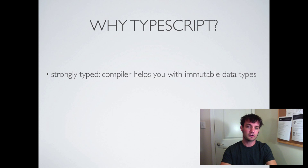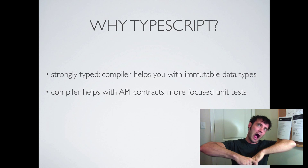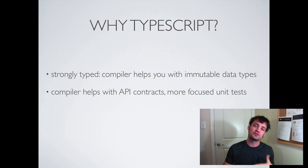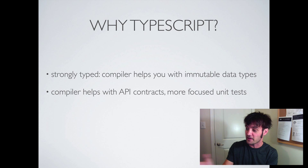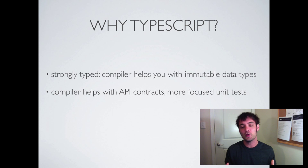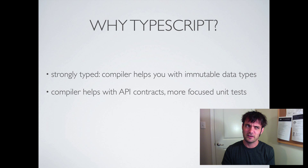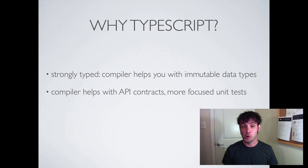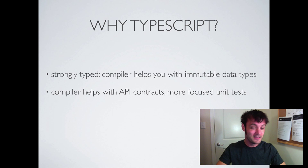Number two: the compiler helps with everything — it allows more focused unit tests. From the ivory tower perspective, of course you should write unit tests. But most people don't write unit tests — it's very difficult to sell to a client. The point is, if you're going to write unit tests you can write more focused ones; if you're not, the compiler helps you with simple errors. This is in addition to JSLinting.